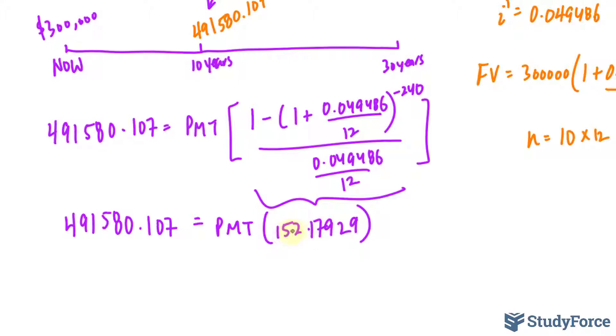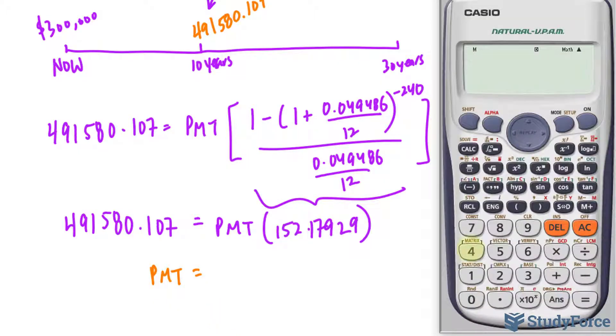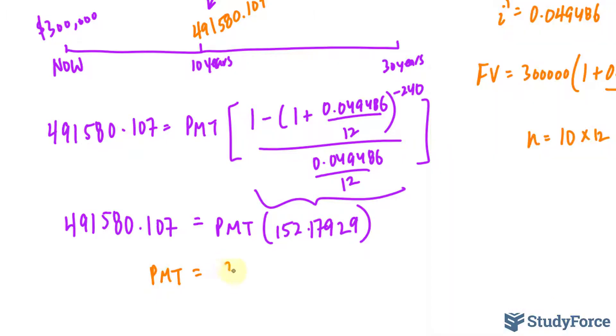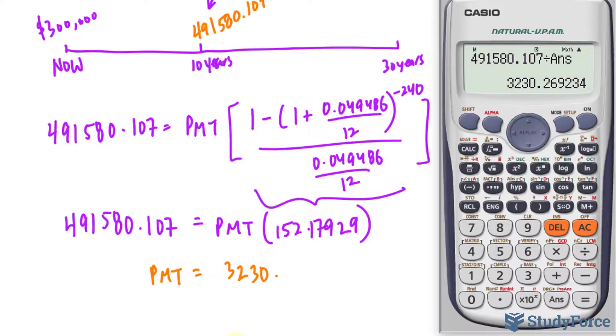We divide both sides by this factor, and we'll end up with PMT, which is our payments every month from 10 years from today. So, 491580.107 divided by what we just found on our calculator, and we end up with $3,230.27.